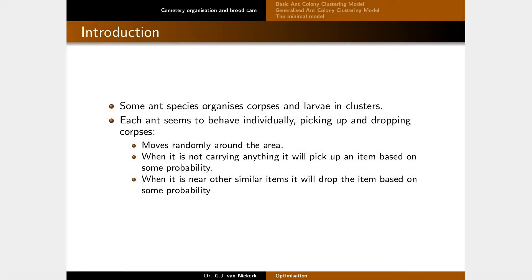Some ant species organise corpses and larvae in clusters — in other words, piles of bodies or larvae. Each ant seems to behave individually: they pick up and drop corpses. They first move around randomly, and if not carrying anything, they may pick something up. If they are near other similar items and carrying something, they may drop it.